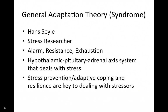There's the general adaptation syndrome — Hans Selye, a stress and physiology researcher. The general adaptation syndrome has three stages: alarm, resistance, and exhaustion. It involves the hypothalamic-pituitary-adrenal axis system that deals with stress: the hypothalamus sends signals to the pituitary gland, which sends signals to the adrenal gland, and that axis system helps create the sympathetic nervous system response. Stress prevention, adaptive coping, and the ability to have resilience are keys to coping. Go back and check out that stress chapter when preparing for your AP exam.